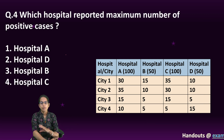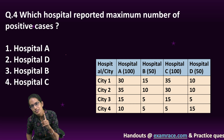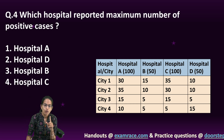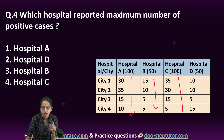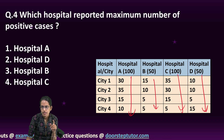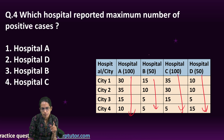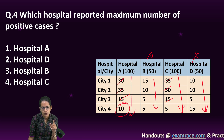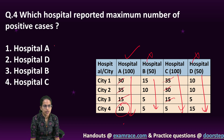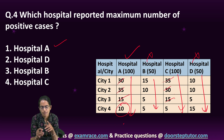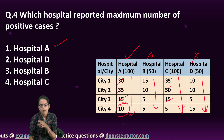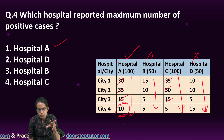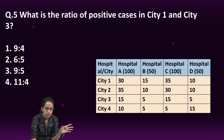Which hospital recorded the maximum number of positive cases? Note: earlier we were talking about cities; now it's hospitals. So we add values vertically. Hospital B has less cases, hospital D has less cases. Comparing A and C: 35 vs 35, 30 vs 30, 15 vs 15 — but A has more in one row. So hospital A has the maximum number of positive cases. I'm cutting similar values to identify where there is an increase, so A becomes the right option.